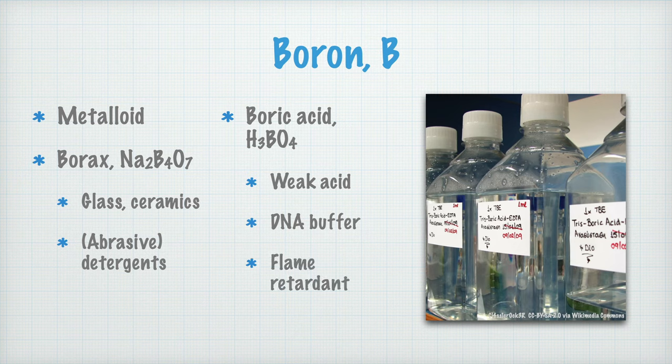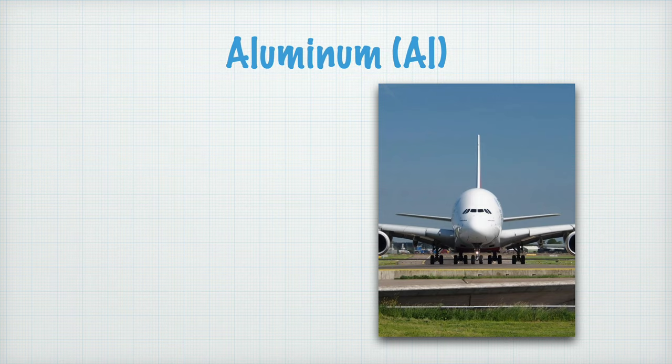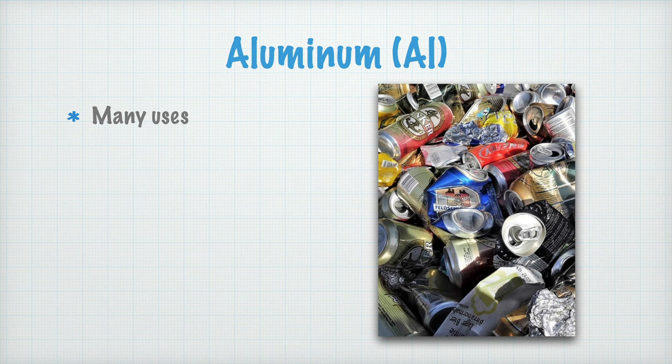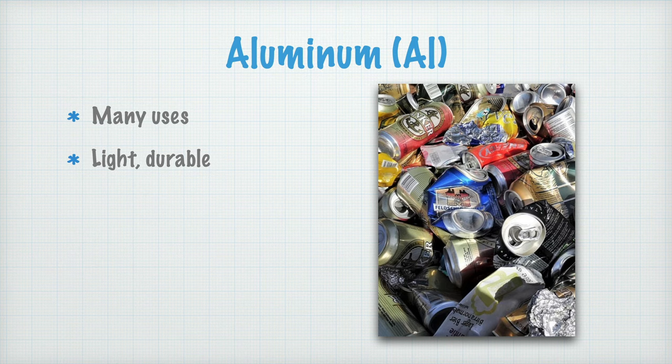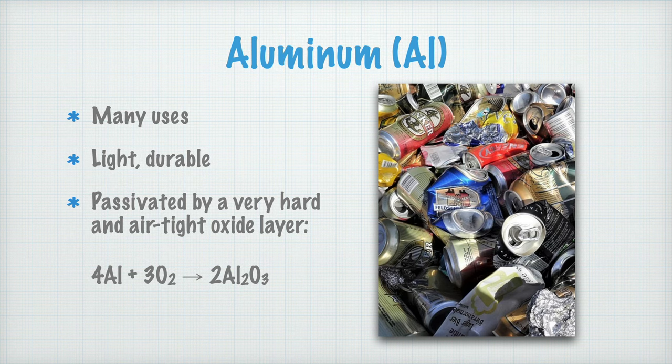The next element here is aluminum. I suppose you're already quite familiar with this element. It has a lot of uses, for example in aircraft, aluminum pans, or soda cans. Aluminum has so many uses because it's both light and very durable. The reason why it's so durable is that it very rapidly reacts with the oxygen in the air. Then, a very hard and airtight layer of aluminum oxide, Al2O3, is formed. This process is called passivation, since it makes the rest of the metal inert, unwilling to react with anything else, or passive.